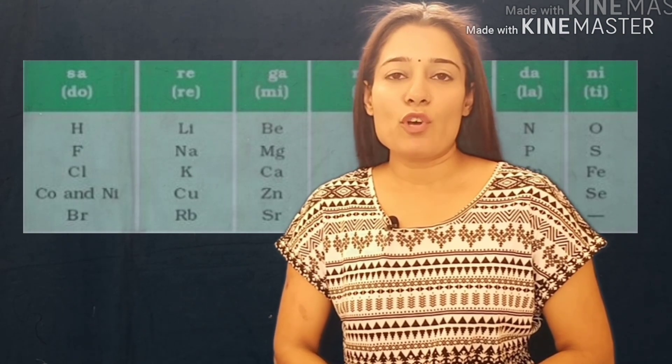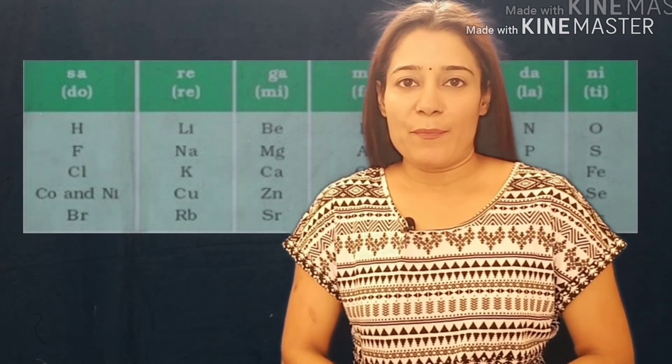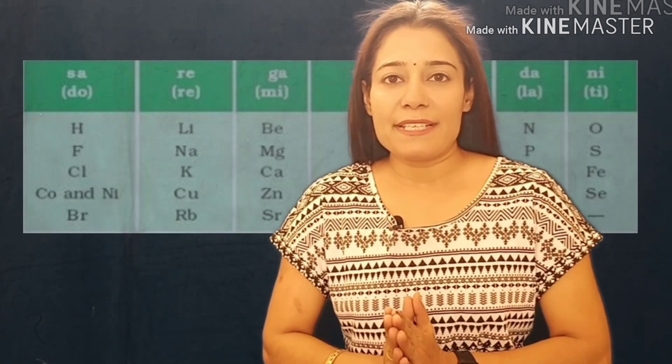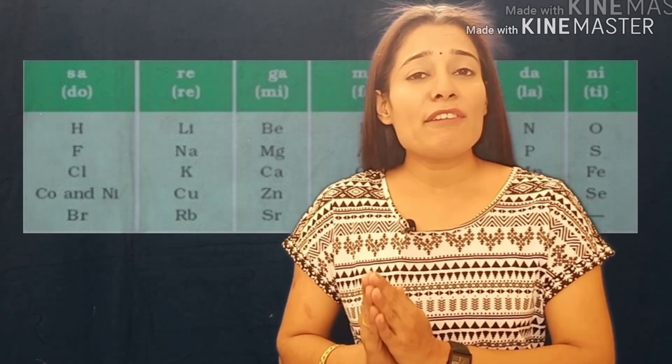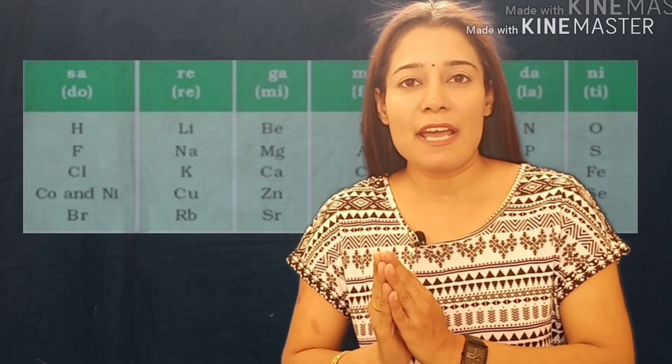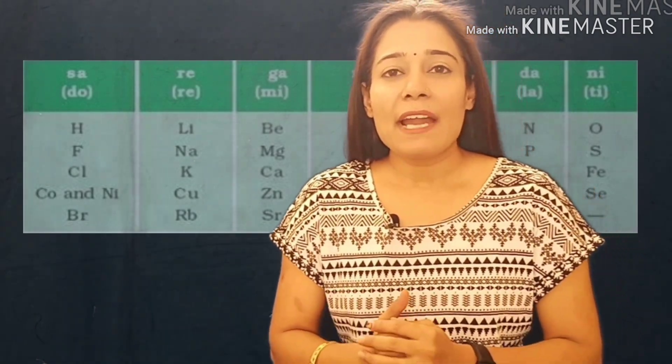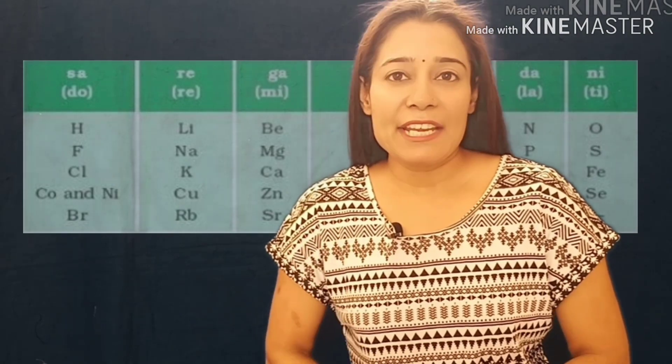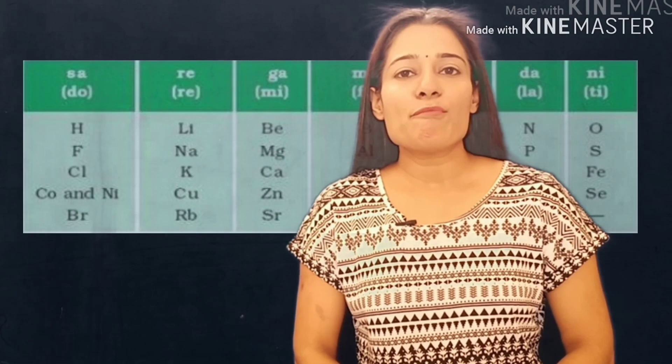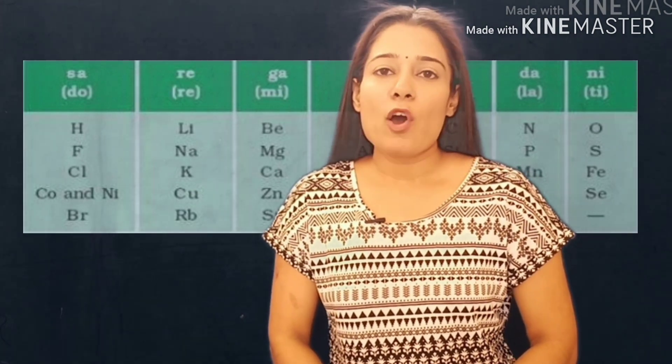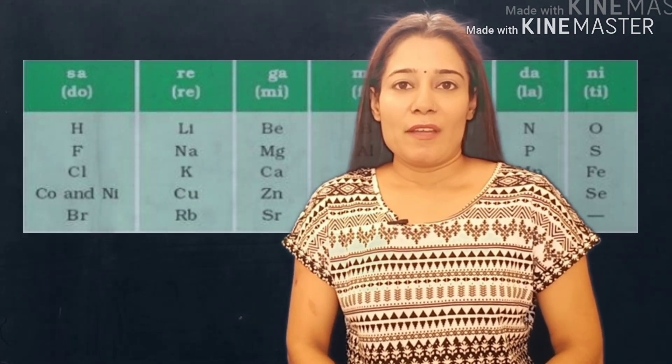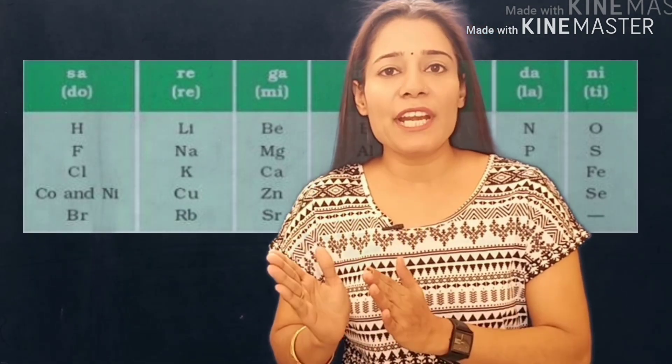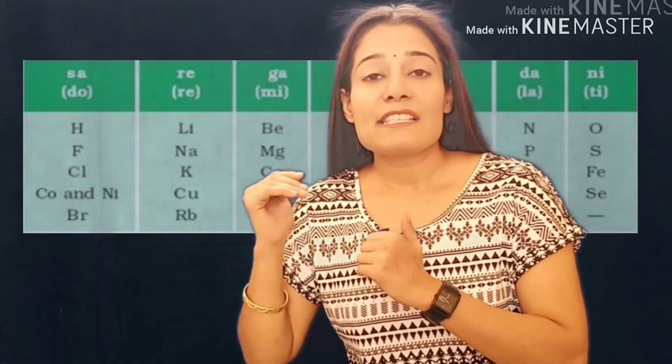In spite of being a good attempt, Newlands' Law of Octave was discarded. Let me tell you why. Newlands tried to make a permanent table which contained 56 elements because at that time only 56 elements were discovered. And Newlands assumed that only these 56 elements existed in nature. But after the discovery of more and more elements, this law became irrelevant.